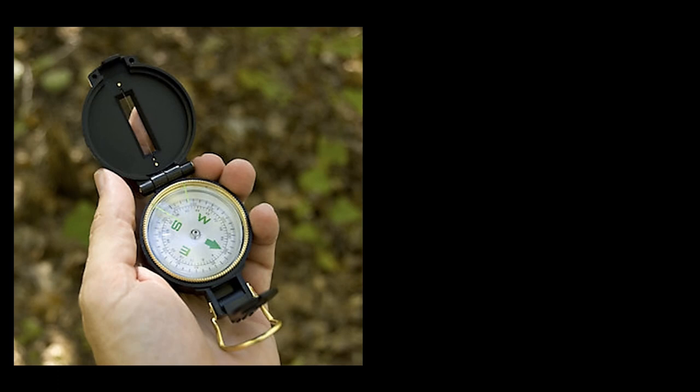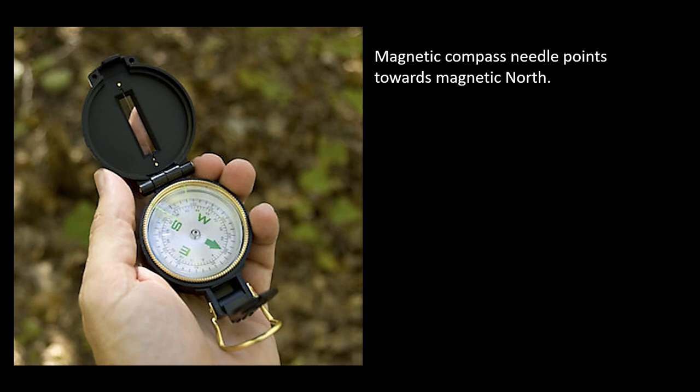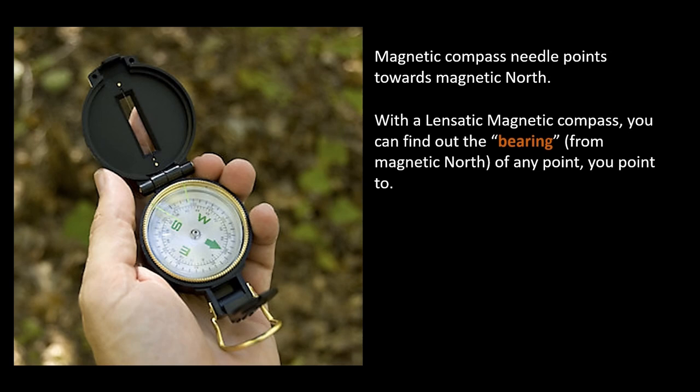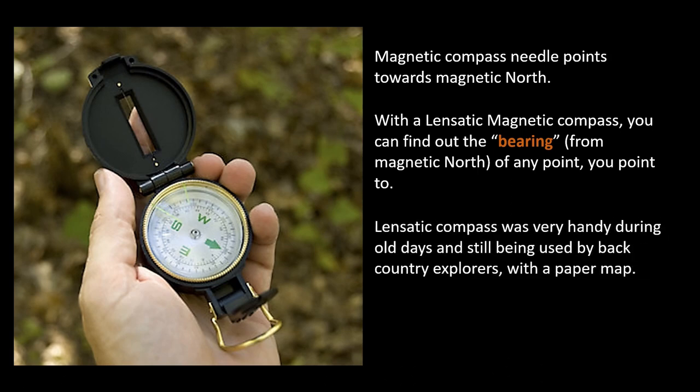Just to be clear, magnetic compass needle points towards magnetic north. With a lensatic compass, you can find out the bearing of any point you point to. Lensatic compass was very handy during old days of navigation and still being used by backcountry explorers with paper maps.